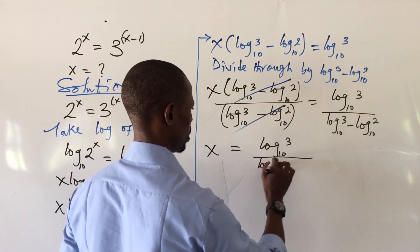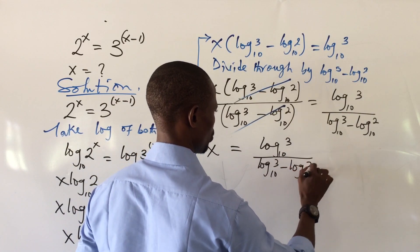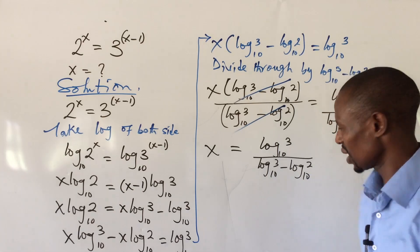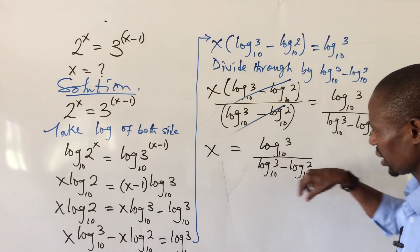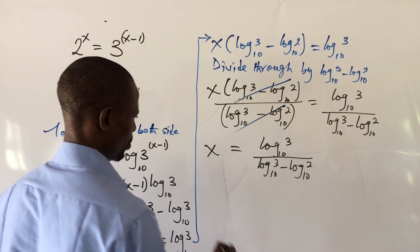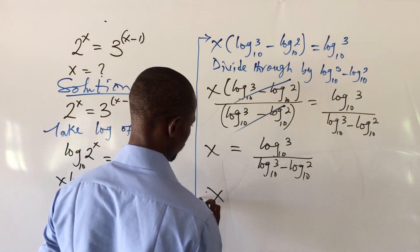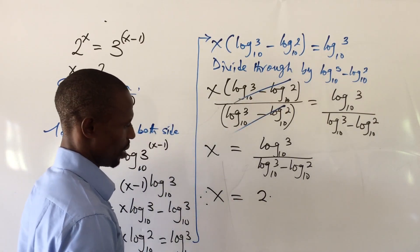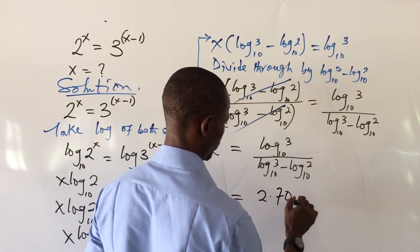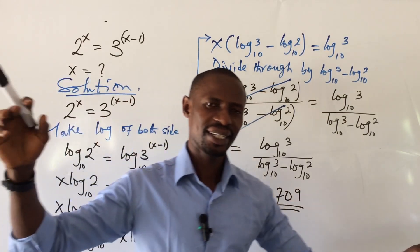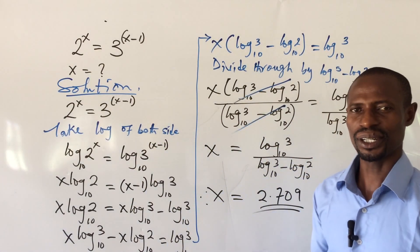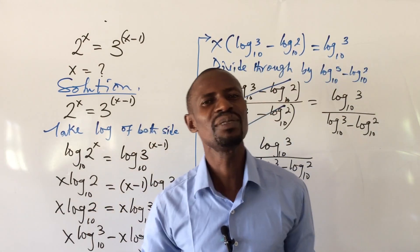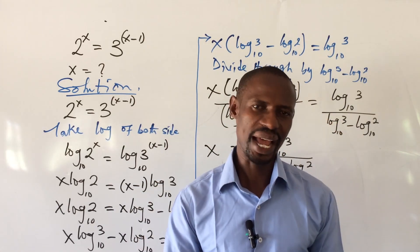If you use your calculator to simplify this and punch it in, you are going to get a value. Therefore, x equals approximately 2.709. This is the solution to this short exponential expression, however simple it may look.